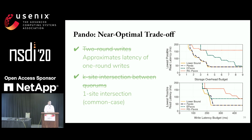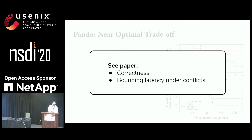Those are the two primary design points of Pando. We have additional content in the paper, including a proof of correctness. Pando also bounds latency under conflict — see the paper for those details.